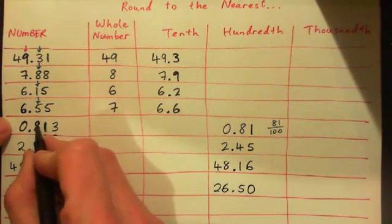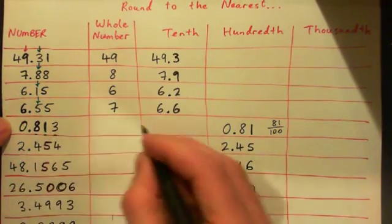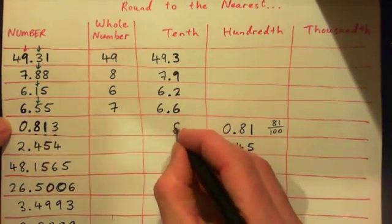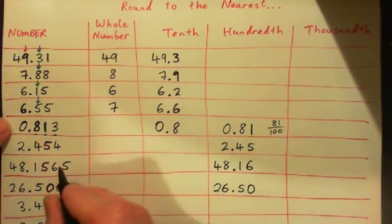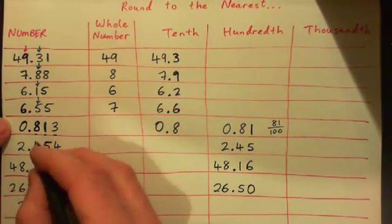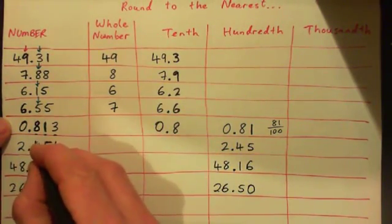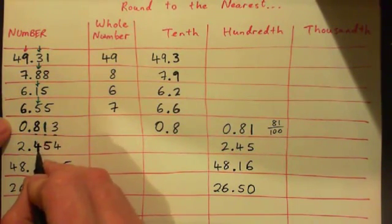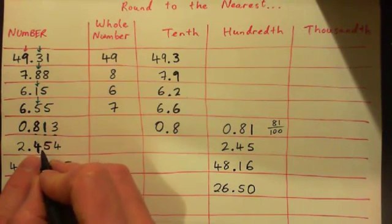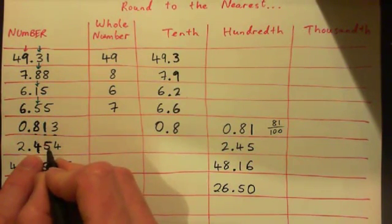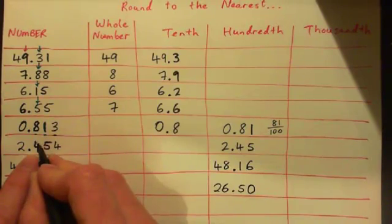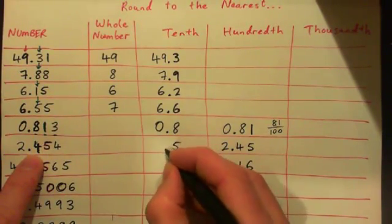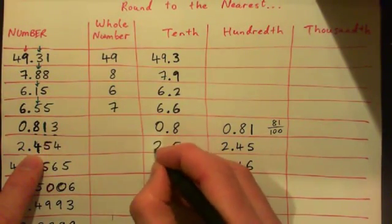The tenths are the digits right after the decimal. So eight is what I'm looking at, and after the eight comes a one, so I round down. This next one — tenths is the number after the decimal — so I want four. I'm interested in this digit four. Now after the four comes this five. If it's five or more, I round up. So I've got to round that up to five. So 2.5.